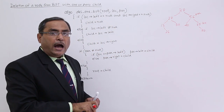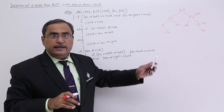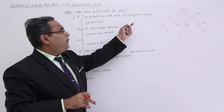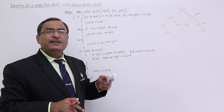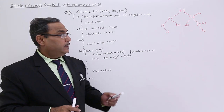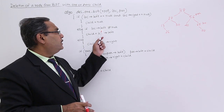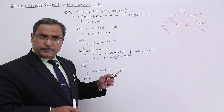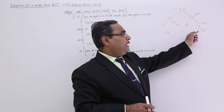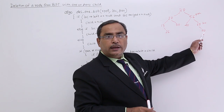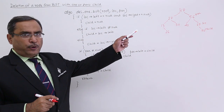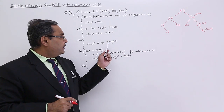Suppose we want to delete node 65, which has one child — node 70 as its right child. First, we determine the child pointer: if loc→left is null and loc→right is null, it is a leaf node, so child is set to null. If loc→left is not null, child equals loc→left. Otherwise, child equals loc→right. In this case, 65 has a right child, so child equals loc→right, pointing to 70.